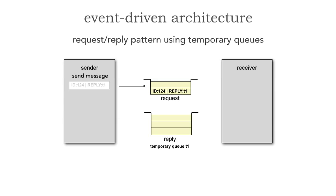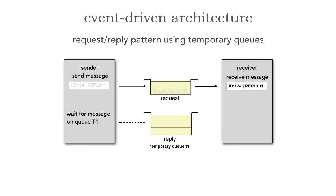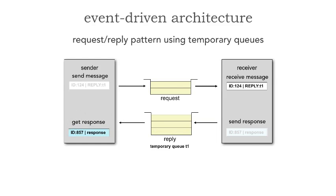No one knows that temporary queue exists except inside that message — the reply field gives you the name of that queue, usually a UUID. So I simply do a blocking wait on that reply queue because it's only mine. The receiver receives the message, does the lookup for the name, sends the response, and now I don't need a message selector — I simply get that response. Once I receive it, the message broker will then remove that queue.